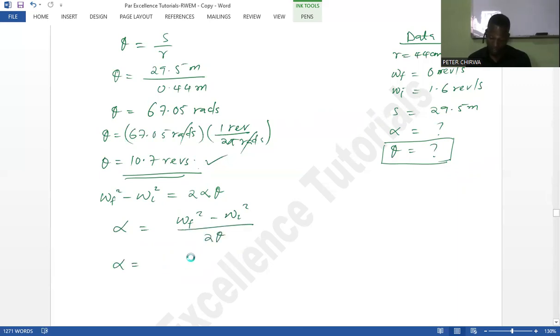So we're going to have the final angular velocity—it is going to rest so it's zero—minus the initial which is 1.6 revolutions per second, squared, over two times 10.7, which we just found.